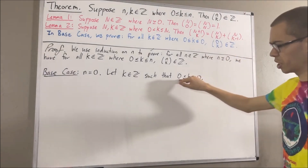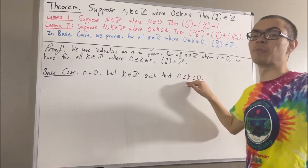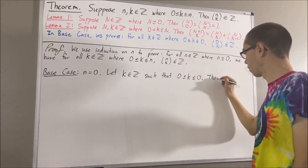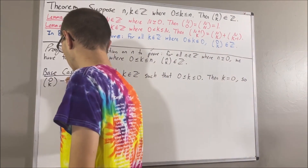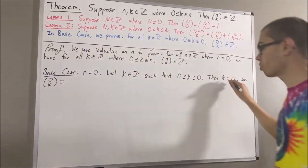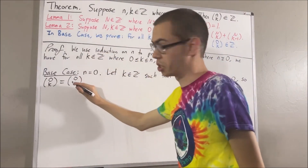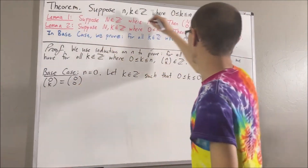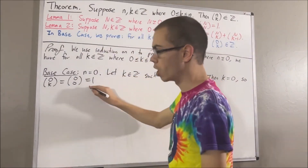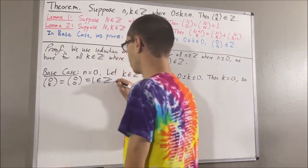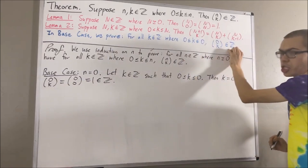Well, since k is greater than or equal to 0 and k is less than or equal to 0, this tells us that k must be equal to 0. And so, if we compute 0 choose k, since k is equal to 0, we can substitute k for 0. And what's 0 choose 0 going to be? Well, according to lemma 1, 0 choose 0 is just equal to 1. And 1 is an integer. So, this tells us that 0 choose k is an integer, which is exactly what we wanted to show.